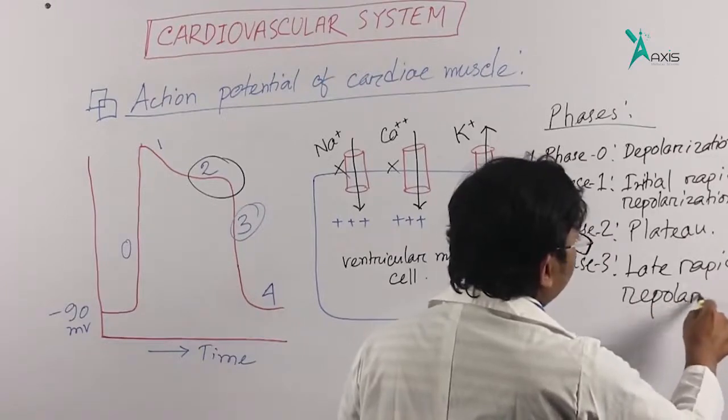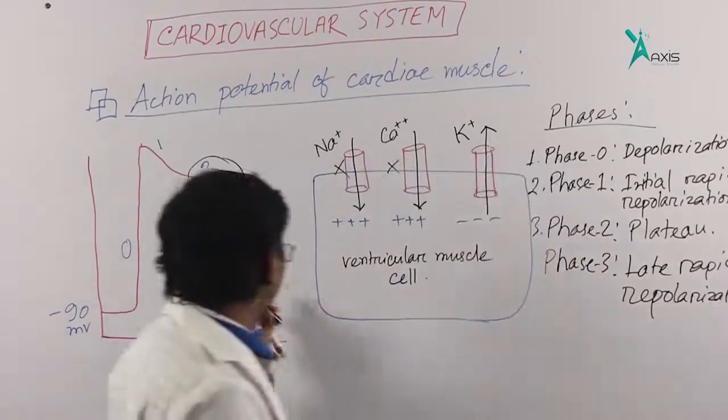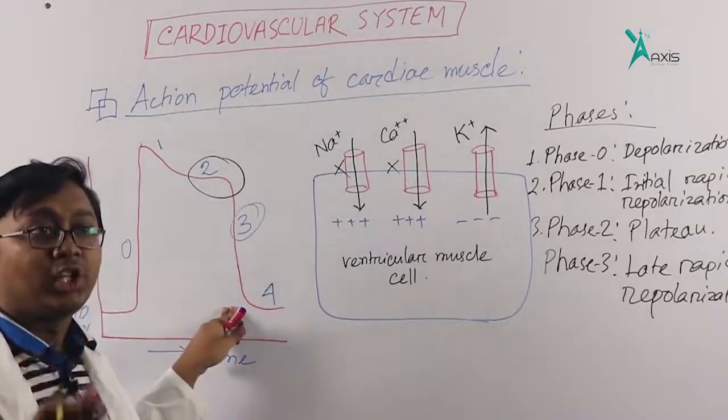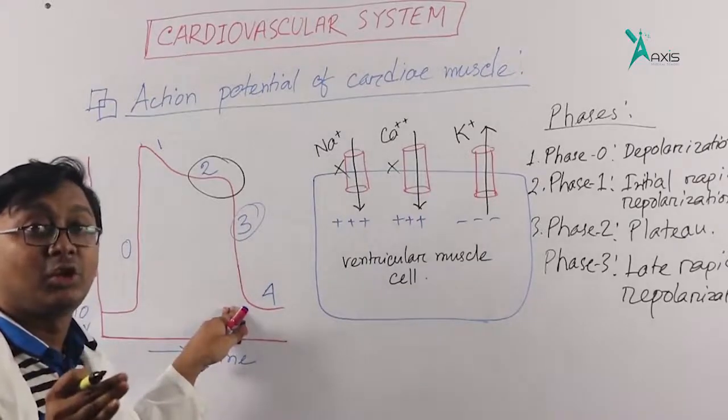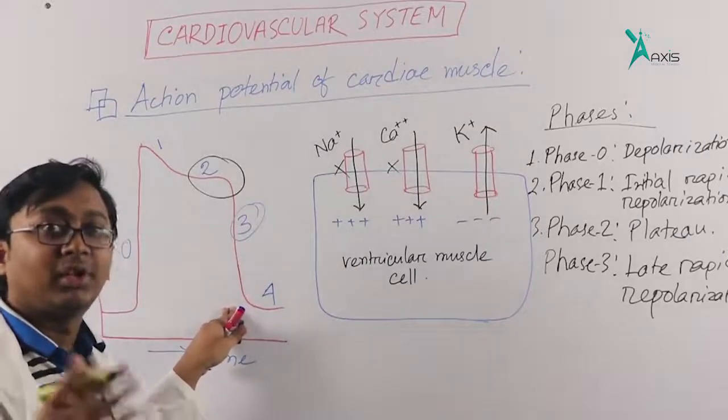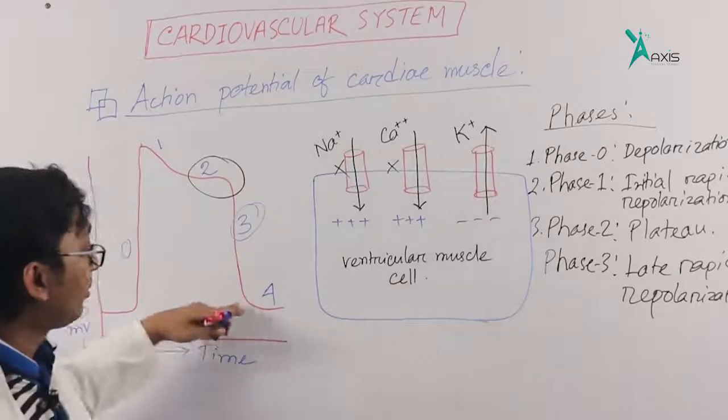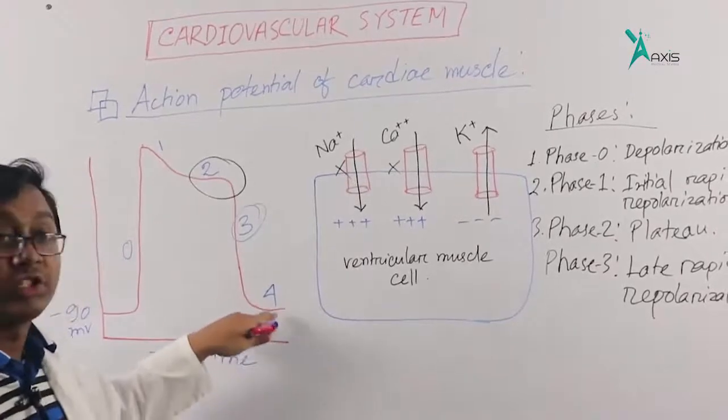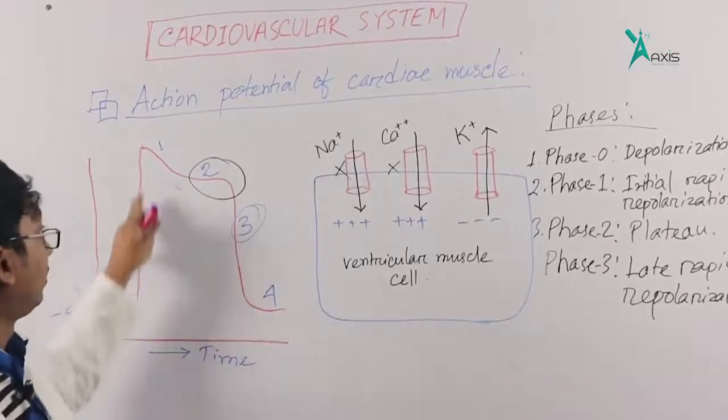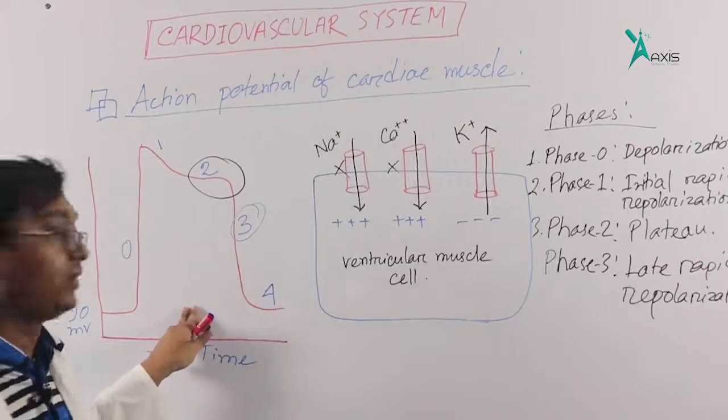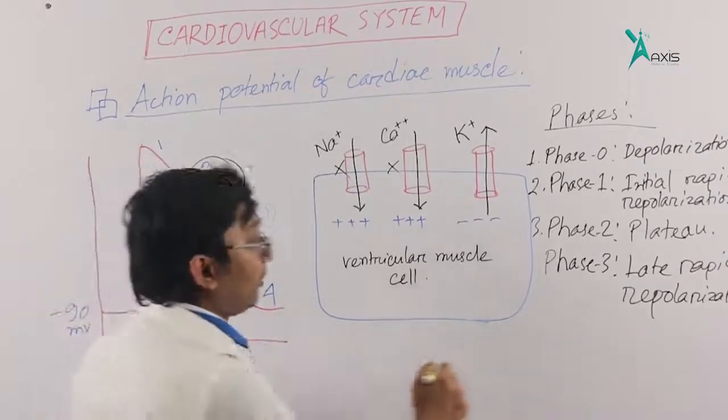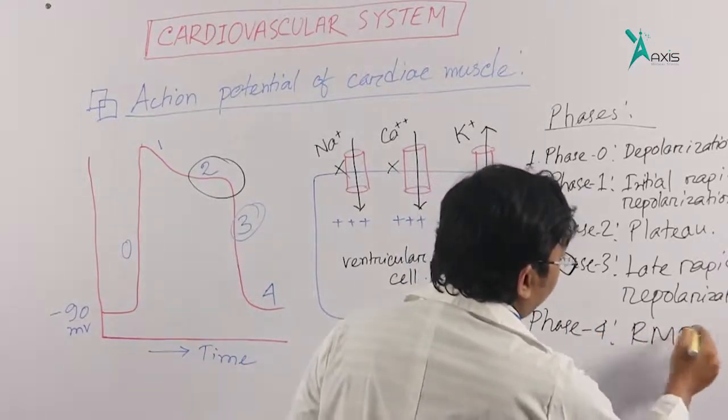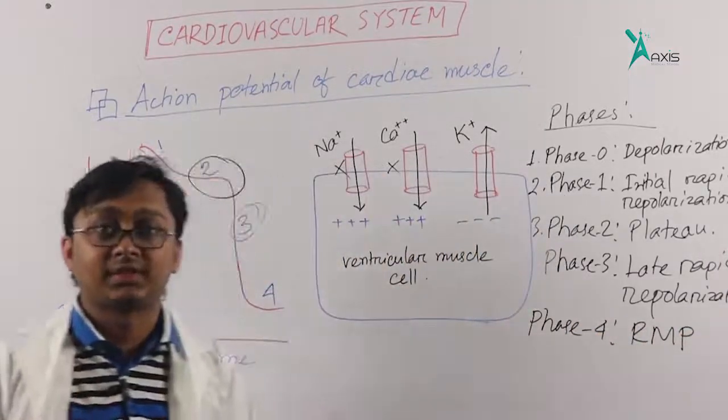After that, potassium channels ultimately close. The sodium channels that were in an inactivated state start to return to the active state. Then we reach the resting membrane potential. This is Phase 4, returning to resting membrane potential. Then the cycle continues.